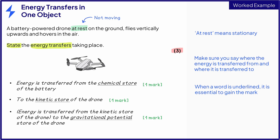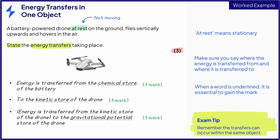Notice in this example that the energy transfers taking place are between different stores in the same object — the drone. Sometimes students think it must be wrong if the energy transfer is not from object to object, but it totally can be. It all depends on the context.